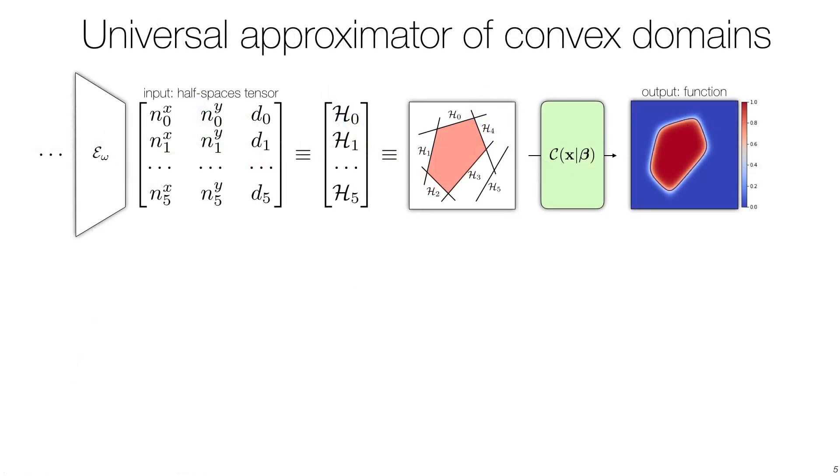We now introduce our differentiable universal approximator of convex domains. We start by having an encoder network predict the parameters of a collection of half-spaces, and reconstruct convex polytopes as their intersection.